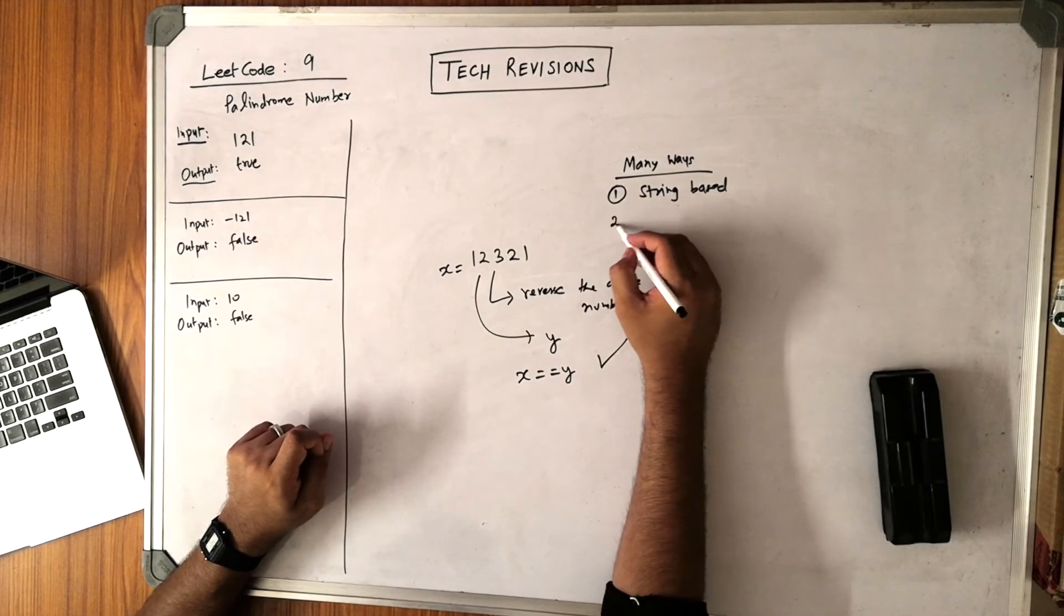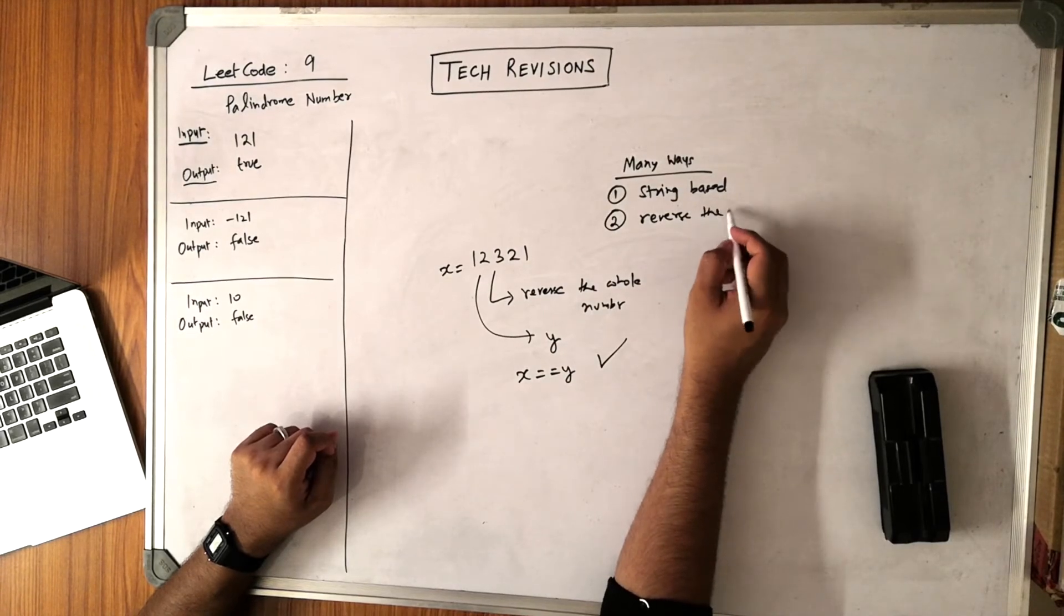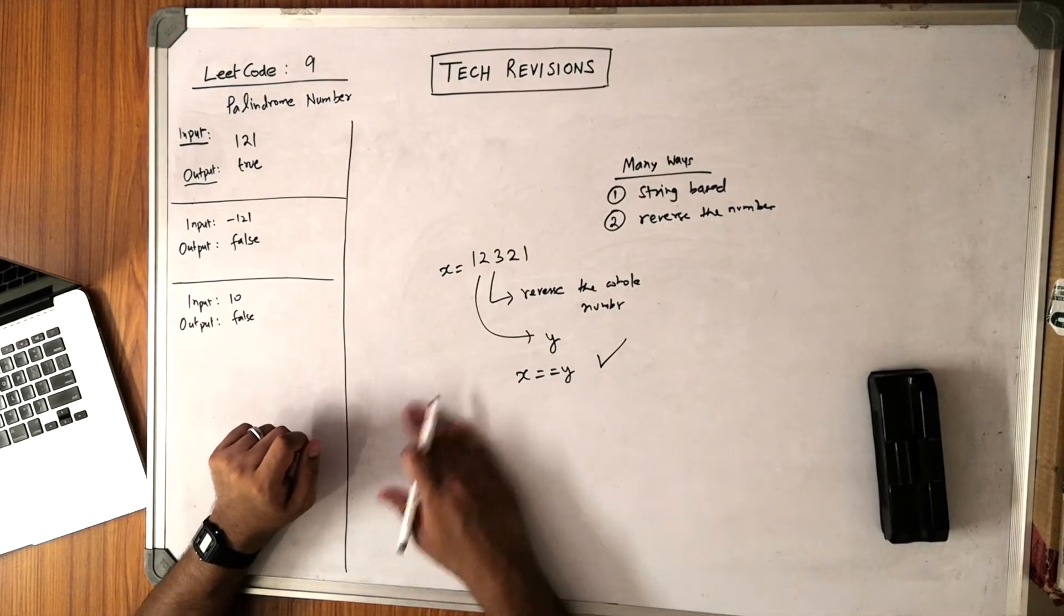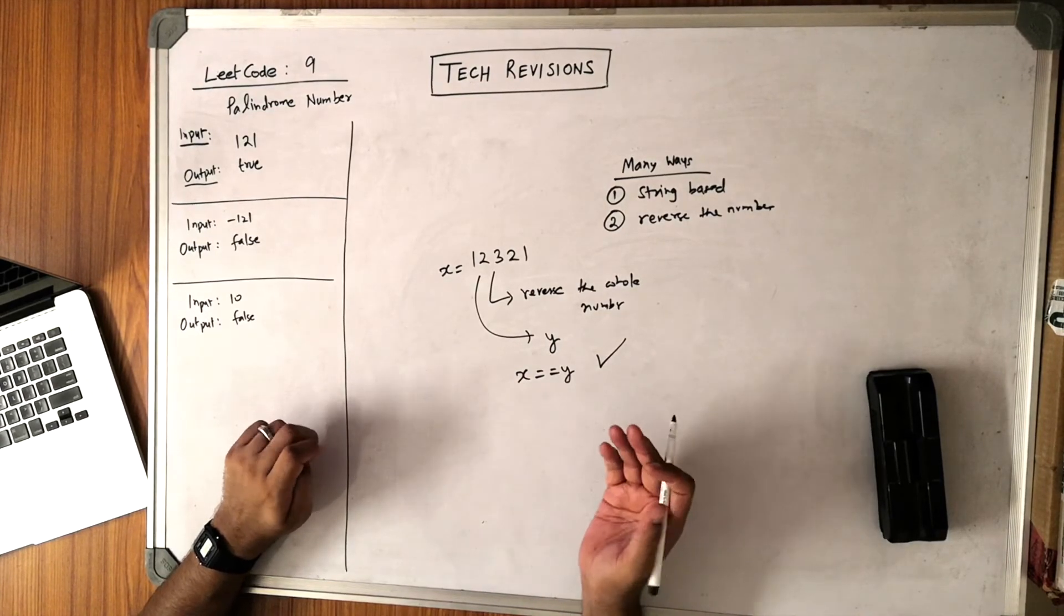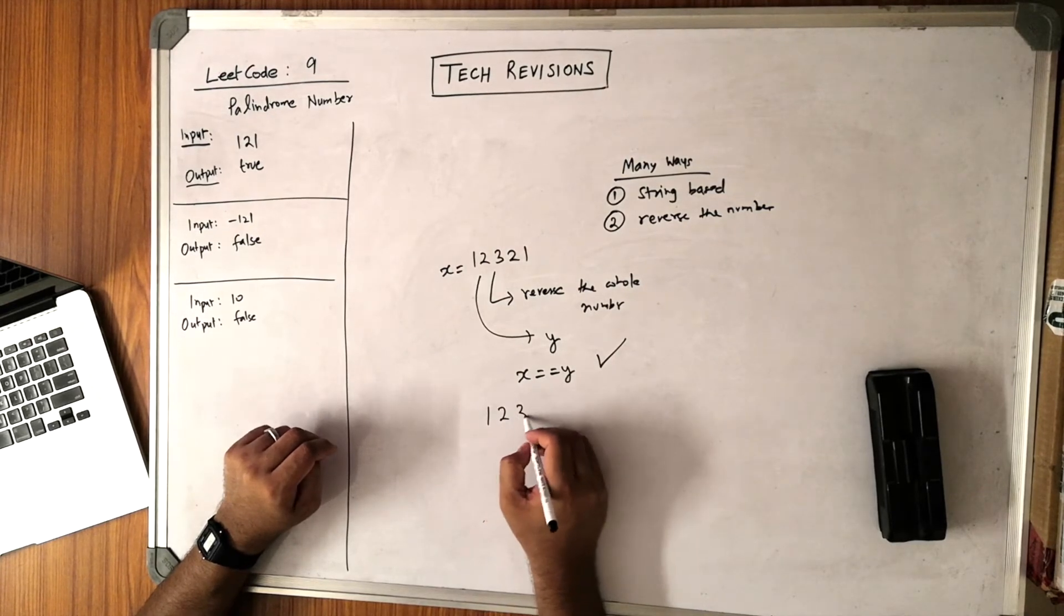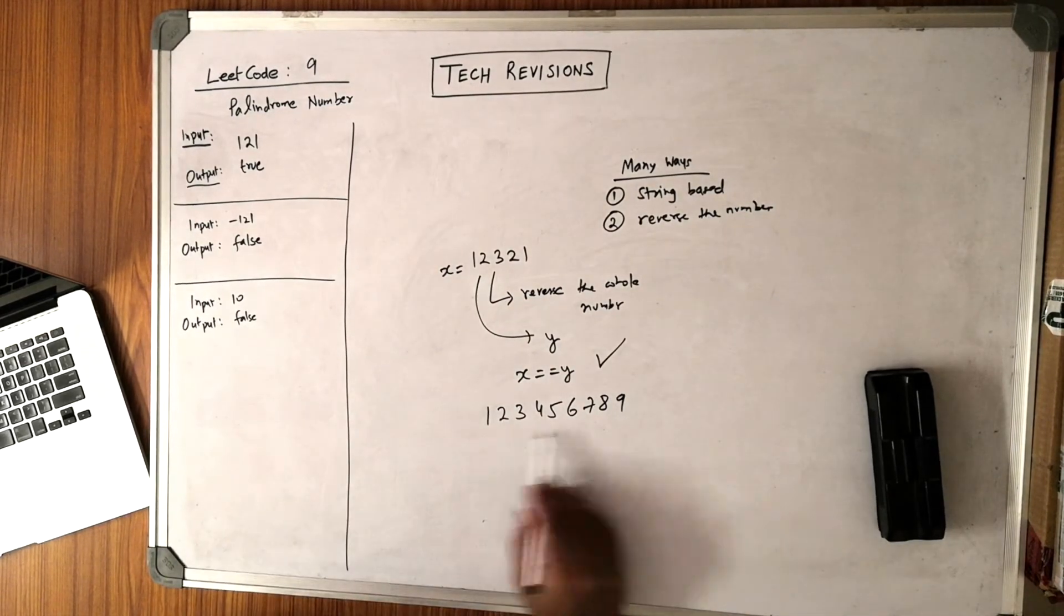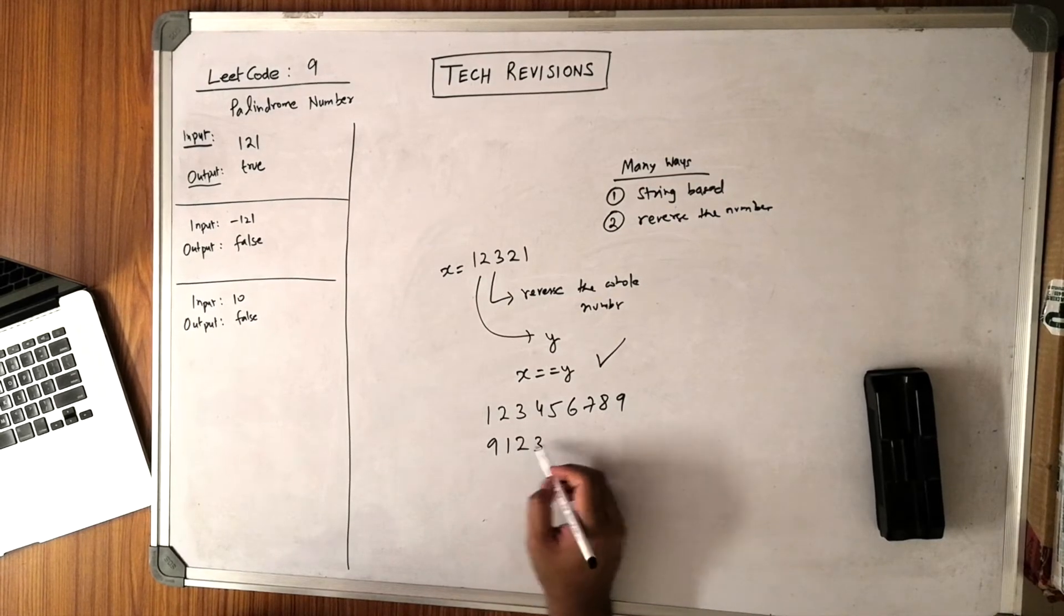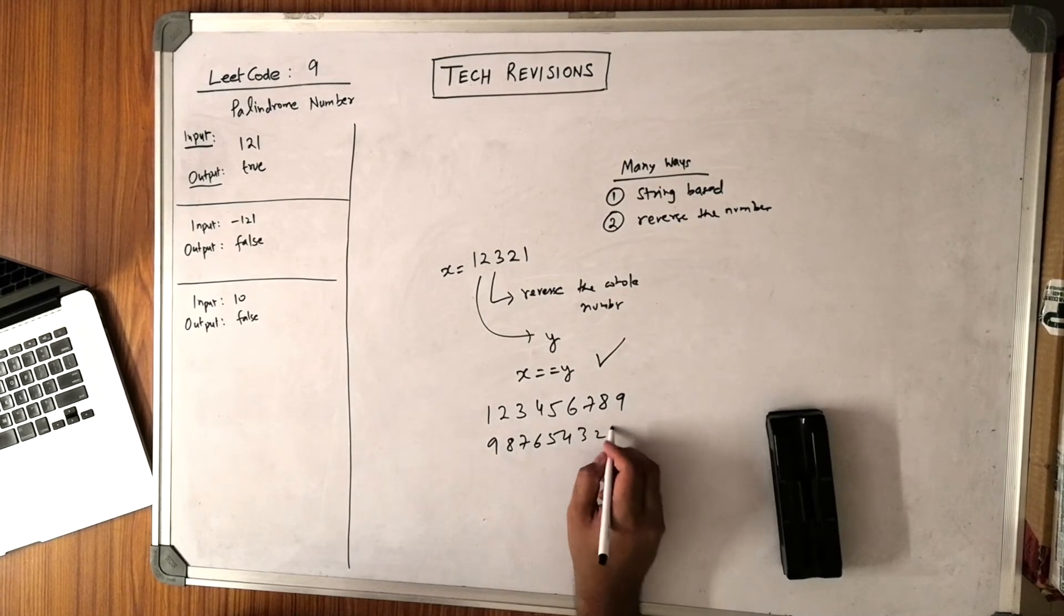So the second strategy is to reverse the number. Now a follow-up question to this could be: what if your number is a number which on reversal goes beyond the integer's range? For instance, if I put something like 123456789, a really huge number. Right now this number is smaller, but if I reverse it, it becomes 987654321.